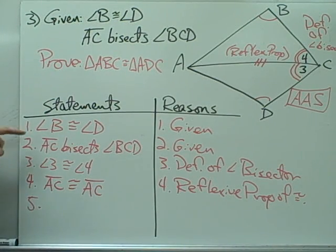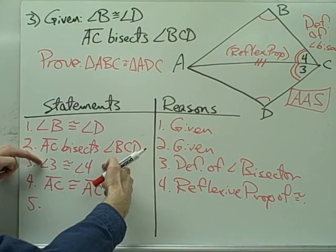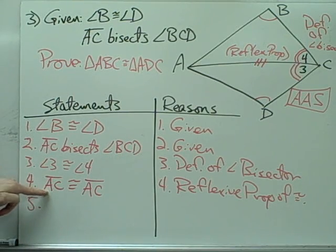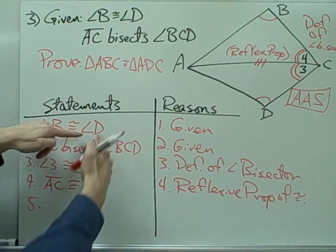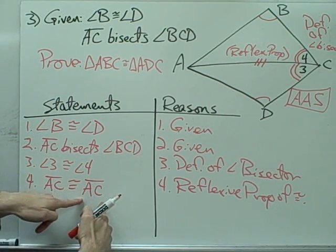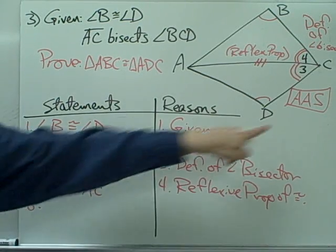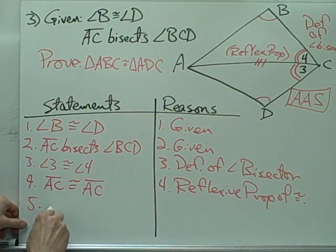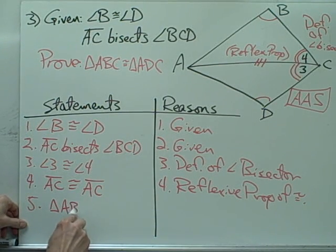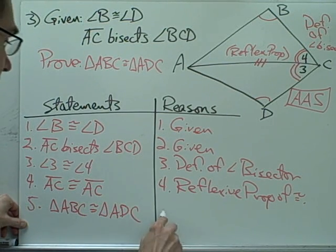I have two angles and the non-included side of one triangle congruent to the two angles and non-included side of another triangle. So I can say these two triangles are congruent by the angle-angle-side postulate — triangle ABC is congruent to triangle ADC.